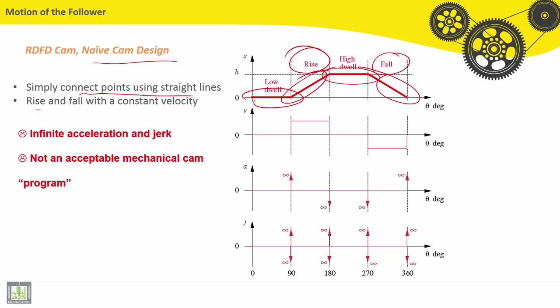Rise and fall with constant velocity. If the position is like that, it includes sudden increases in velocity here, sudden decreases in velocity here and here too.